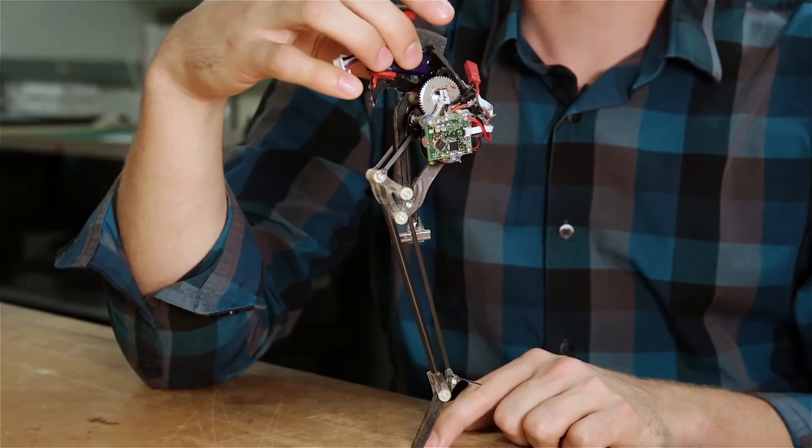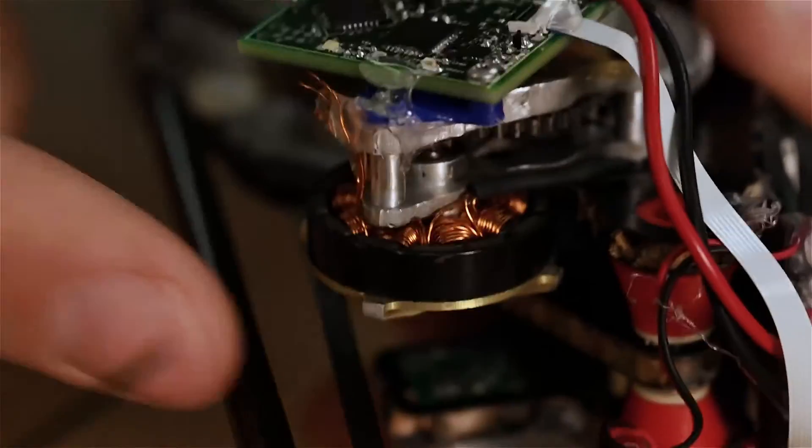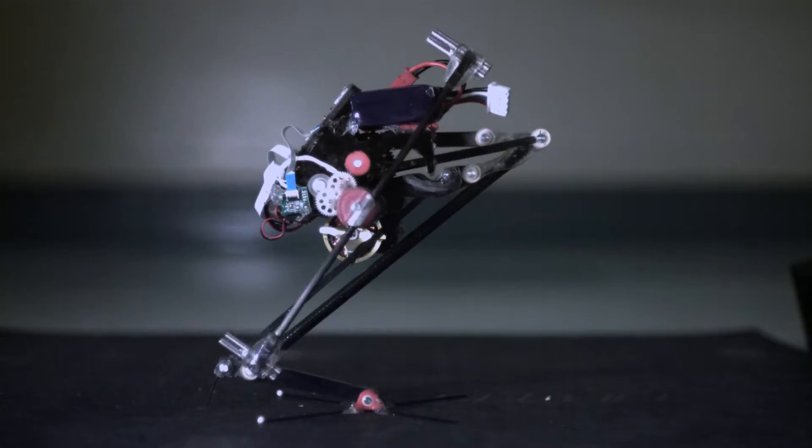So we built into Salto the capability for a super crouch. What that allows is to have the motor be able to stretch out the spring and keep the robot crouched for longer.